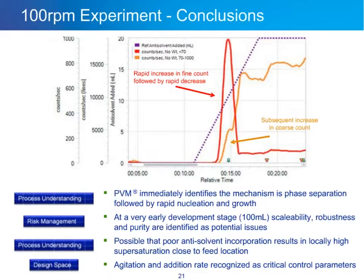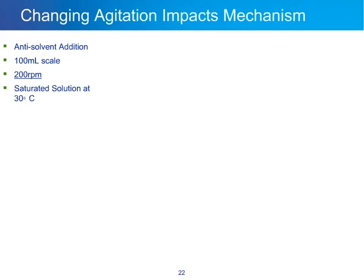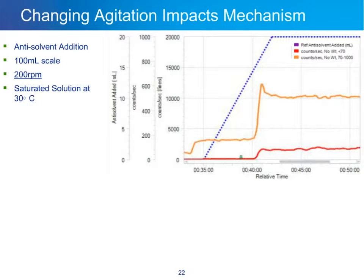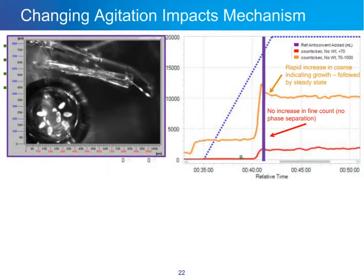We now repeat the exact same experiment but with agitation at 200 RPM. The FBRM trend is very different: we don't see that rapid increase and decrease in fine count, indicating no phase separation or oiling out. Instead, we see a rapid increase in the coarse count, indicating extremely fast growth that reaches steady state very quickly. Taking a PVM image at the point where we previously saw oiling out, we see simply nice, long, well-formed crystals with less agglomeration.